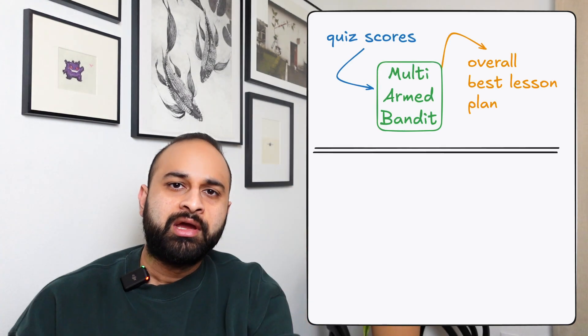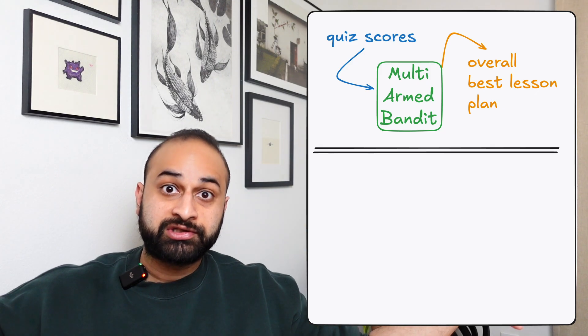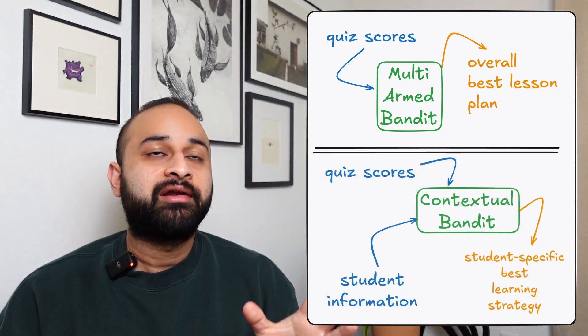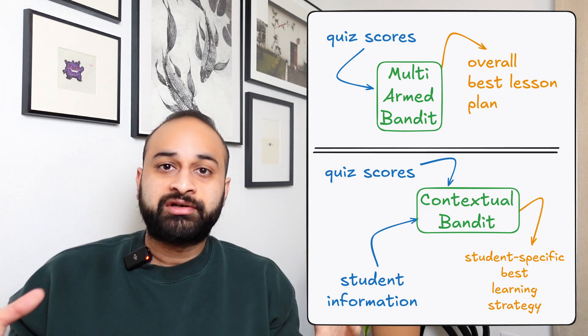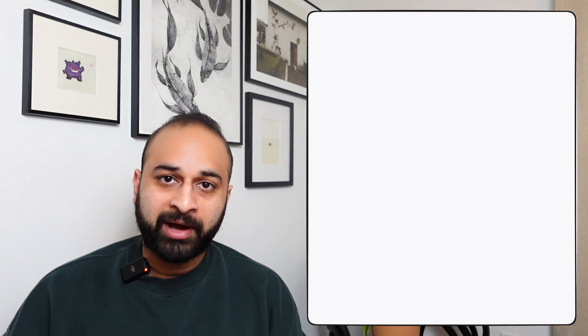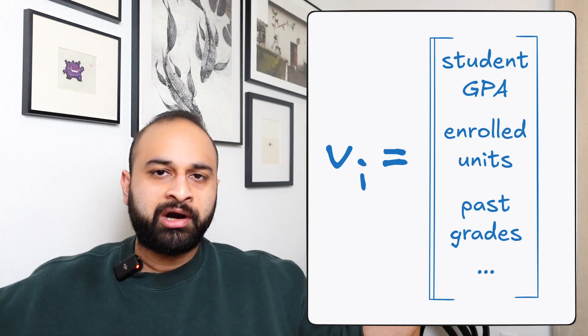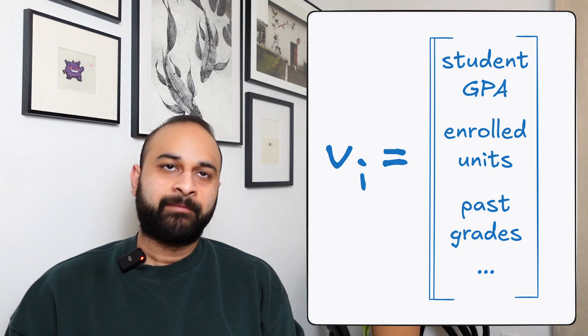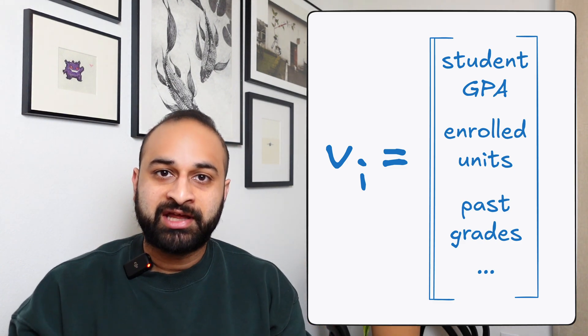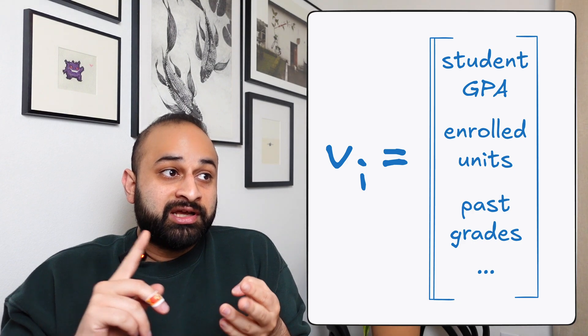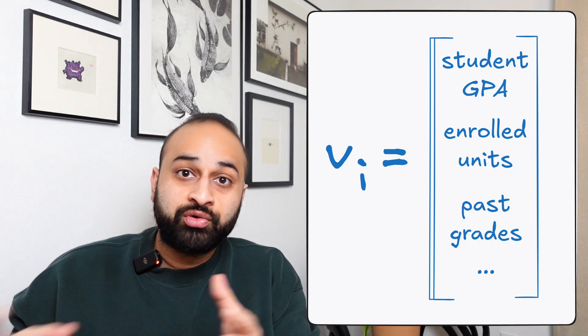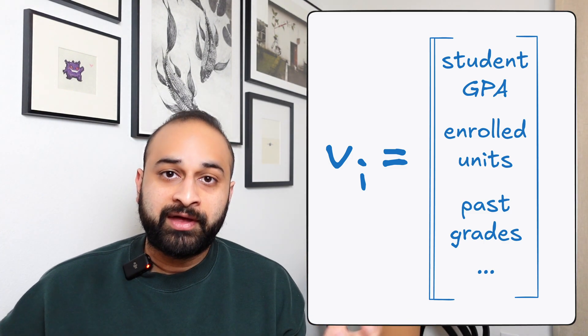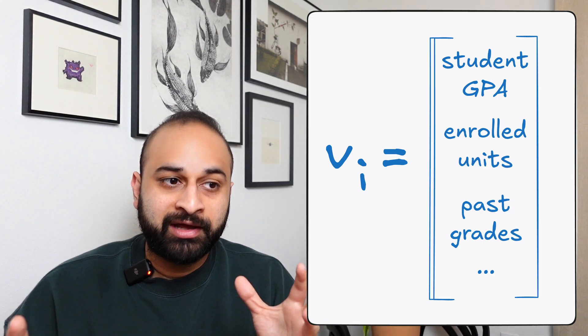We hop out of bed and think about what needs to change. Right now in our multi-armed bandit setup we are picking the best lesson plan based on the average quiz score across all students. We want to change that — we want to pick the best lesson plan based on some context, a vector of information we know about each student. Let's call that v_i. This can be things like that student's GPA, how many credits they're enrolled in, how they did in previous math-based or intuition-based courses.